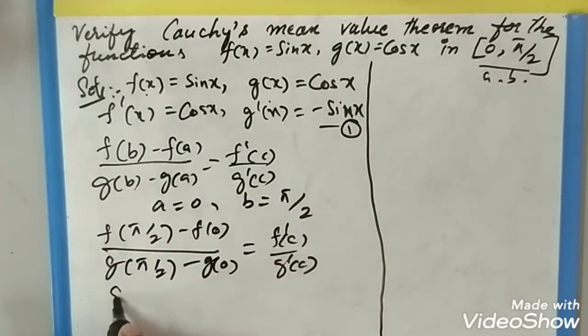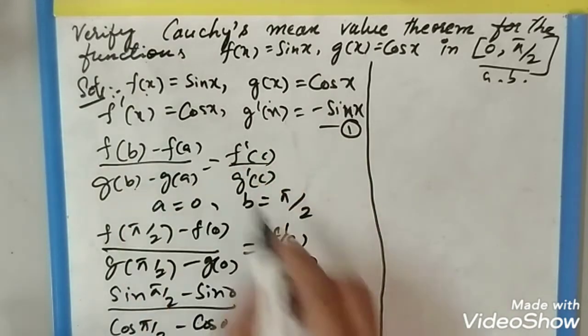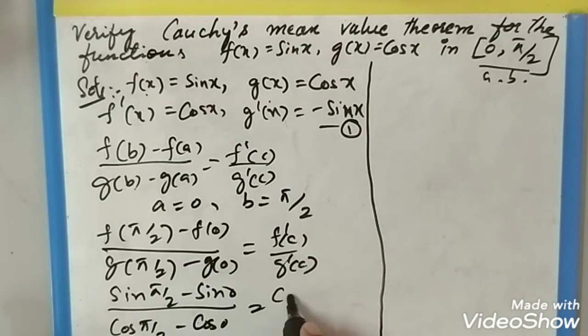sin(π/2) - sin(0), then cos(π/2) - cos(0), and f'(c) - instead of x you have to write c: cos c divided by -sin c.